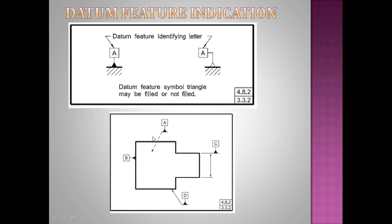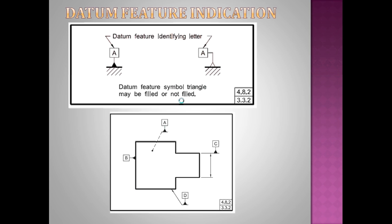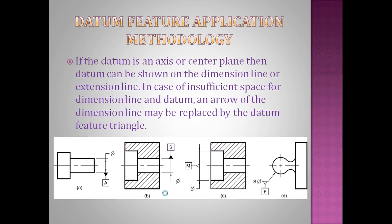Suppose if you want to apply it to the surface which is not visible, then use the dotted line. So that is the concept. Using dotted line you can point to the other face which is opposite to the visible face in orthographic projection.